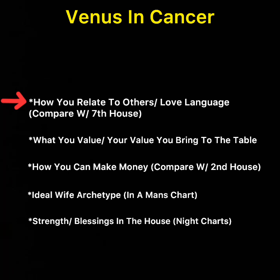This can also show qualities of your mother, because Cancer rules over the mother. She could have been someone who liked her home to be beautiful. She may have had a diplomatic type of demeanor and could be very attractive with Venus coming through Cancer. Since you value home and family, you bring a certain level of maternal and protective energy to the table.